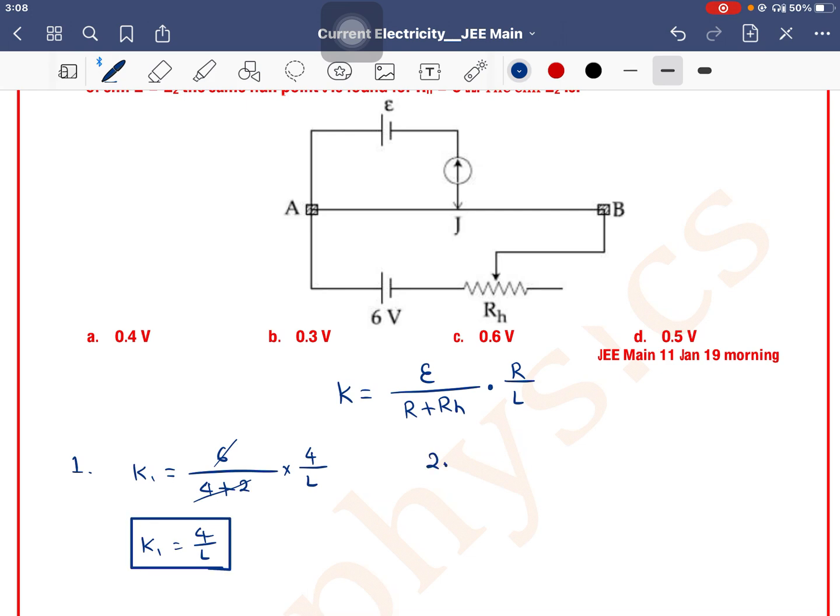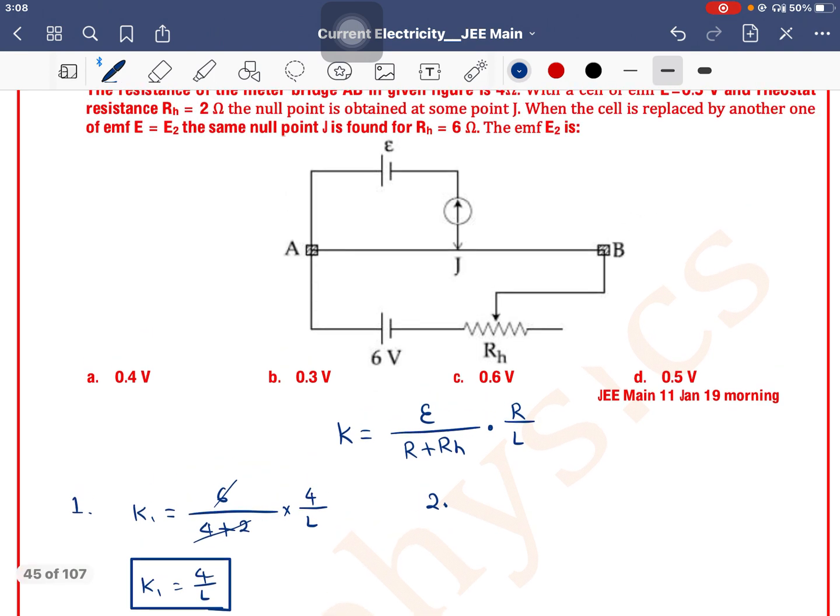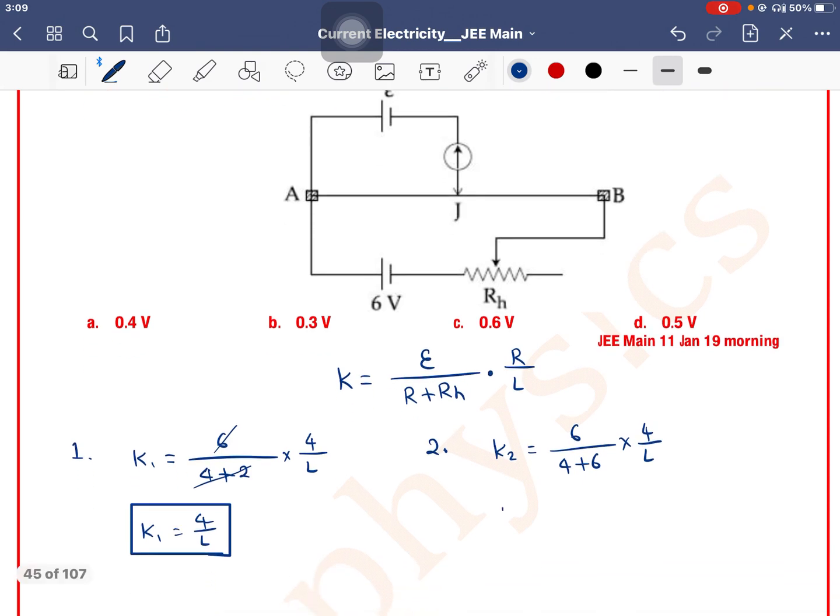Second case, what will be rheostat value? It is 6 ohm. So K2 is equal to E, 6 divided by 4 plus 6 into 4 divided by L. So this is K2 value. So this will be 24 divided by 10 L. Right? So this will be K2 value.